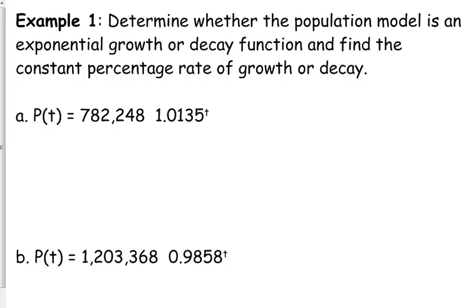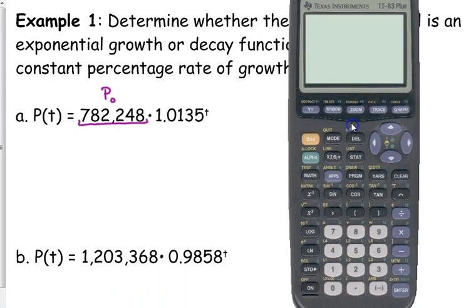Okay, so let's look at these models here, and let's just decide whether they're exponential growth or decay, and find that constant percentage rate of growth or decay. Okay, so that first population there, this was not part of the question, but this is the initial population, the 782,248. That's the initial population. The base is greater than one. So this is growth.